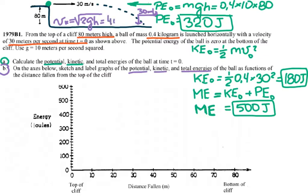The vertical velocity is found using the square root of 2gh, which gives 40 meters per second. To find the time to hit the ground, divide the change in vertical velocity by acceleration: initial vertical velocity is 0, final vertical velocity is 40, change is 40, and acceleration is 10, giving 4 seconds.